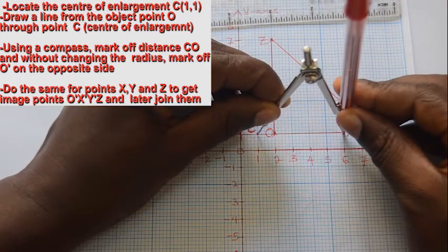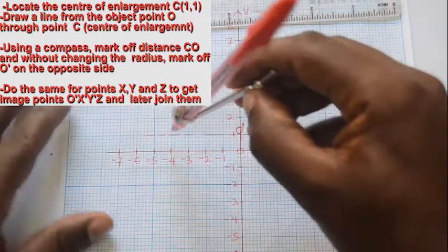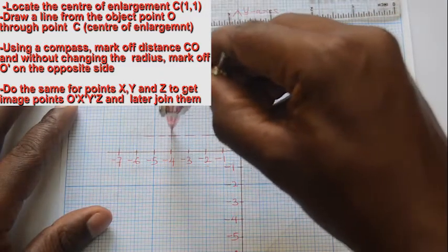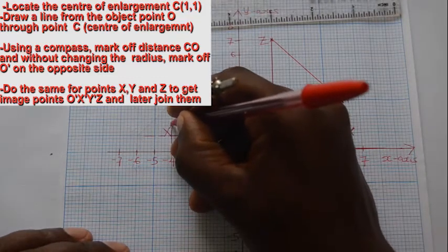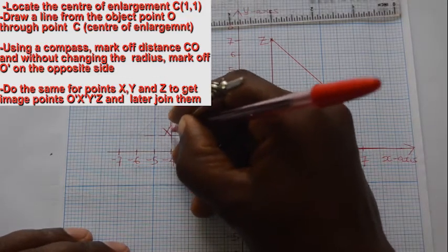Since X is along the same line, we mark off its image point X prime using the same procedure.